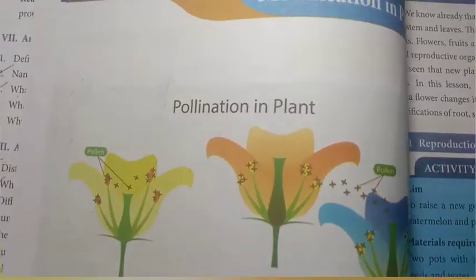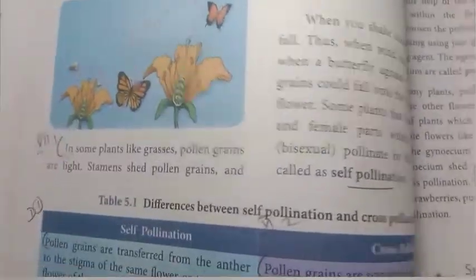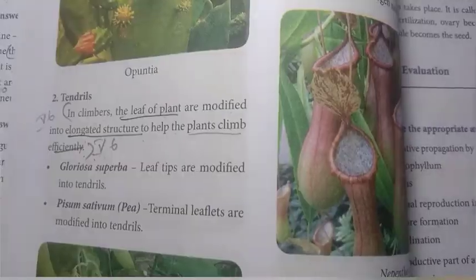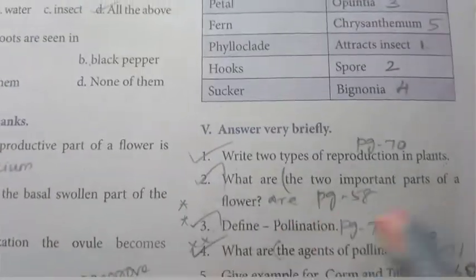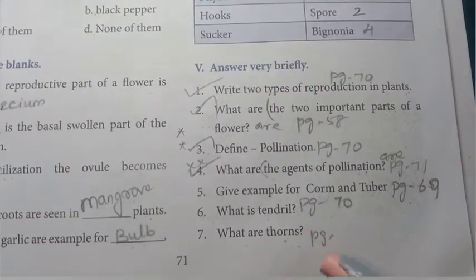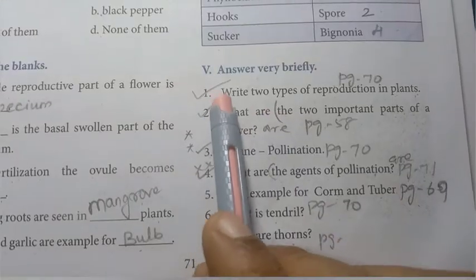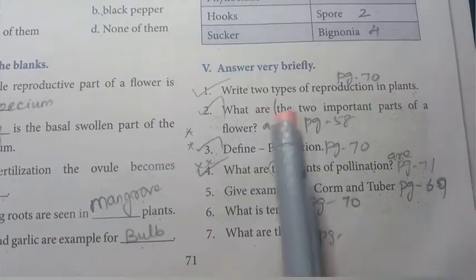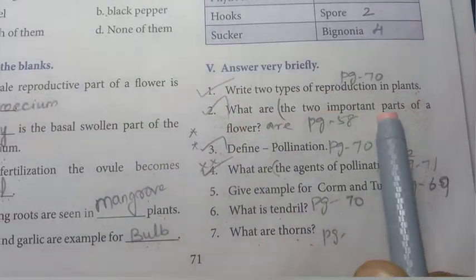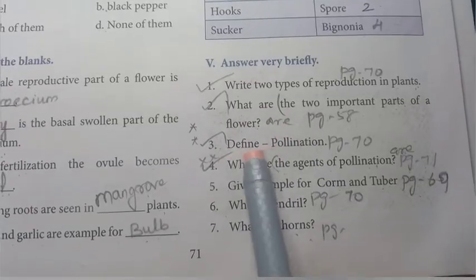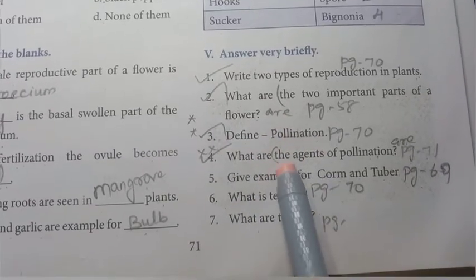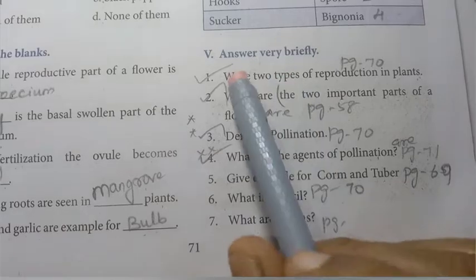Unit 5: Reproduction and Modification in Plants. So in the lesson Bookback exercise 1 mark, answer very briefly. Here is the question, it is very important. Write two types of reproduction in plants. What are the two important parts of a flower? Define pollination. What are the agents of pollination?